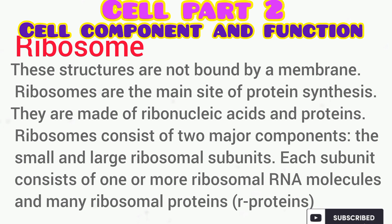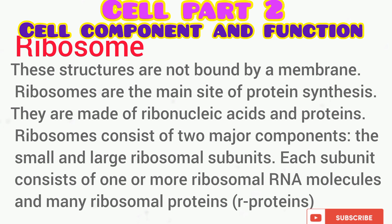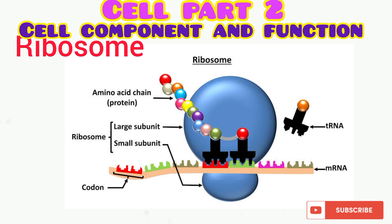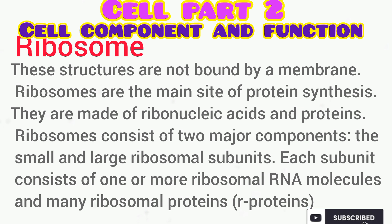The next organelle we will discuss is the ribosome. The ribosome is not a membrane-bound organelle; therefore, it is found in both prokaryotic and eukaryotic cells. The function of the ribosome is protein synthesis, and it is made up of both ribonucleic acid and proteins. Ribosomes consist of two major components: the large subunit and the small subunit, each comprising ribosomal RNA and protein.